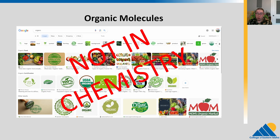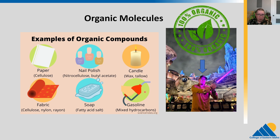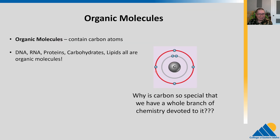Let's talk about what some organic compounds actually are. Paper is made up of cellulose. Nail polish is an organic compound — it's got nitrocellulose and butyl acetate in there. Candles are made with wax or tallow — those are organic compounds. A lot of organic compounds have the property that they will burn. Fabrics, cellulose, something synthetic like nylon, rayon — soaps, gasoline — all organic compounds. And yes, we are indeed organic compounds as well, made up of a large portion of organic compounds. Many of them are hydrocarbons, just like gasoline.